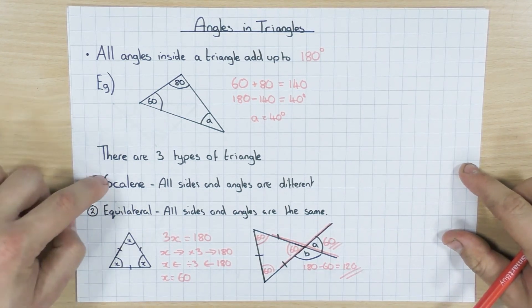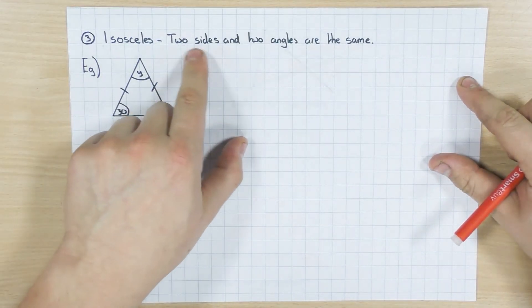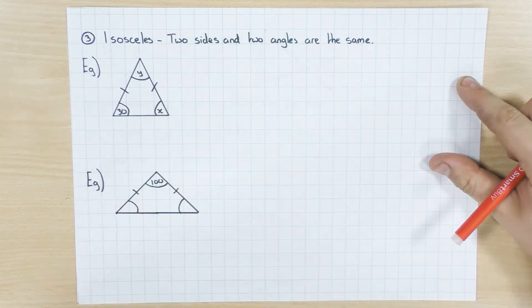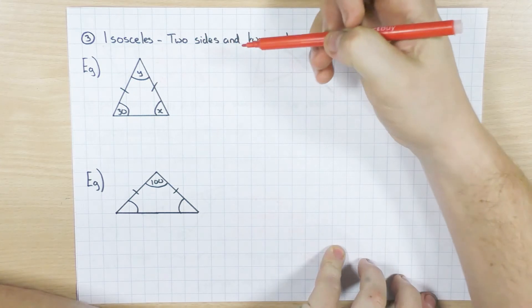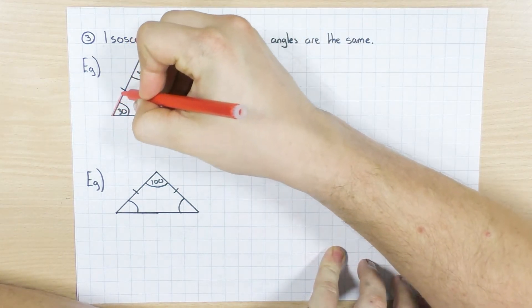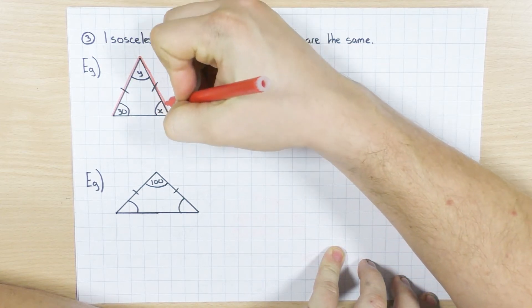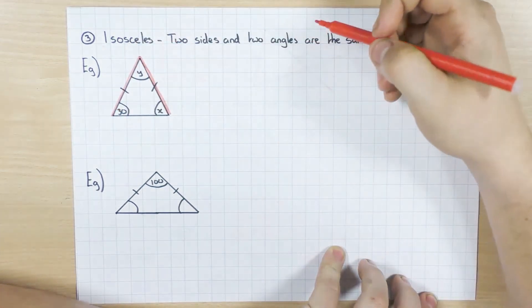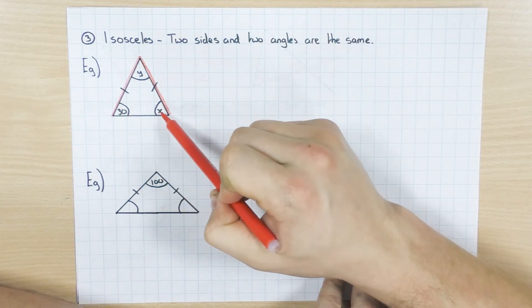So that's two triangles, scalene, equilateral. The last one is isosceles. Now, isosceles has two sides and two angles that are the same. So again, I've got these two dashes going through my sides, so that tells me that these two sides are the same. And then what I do is I just highlight them. The reason why I highlight them is to help me identify which angles are the same, because it's always the two angles at the end.